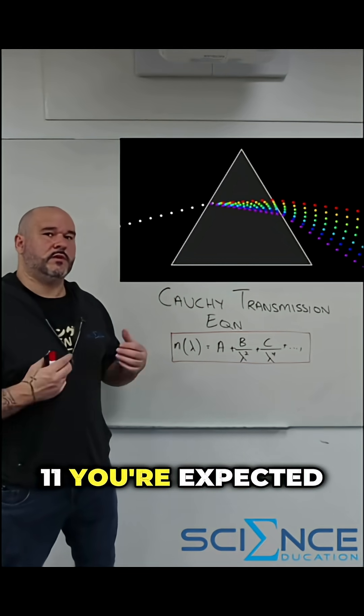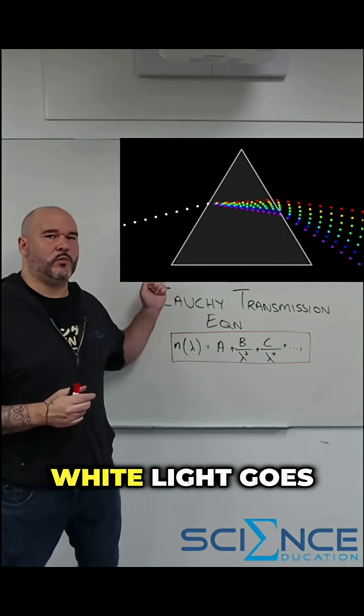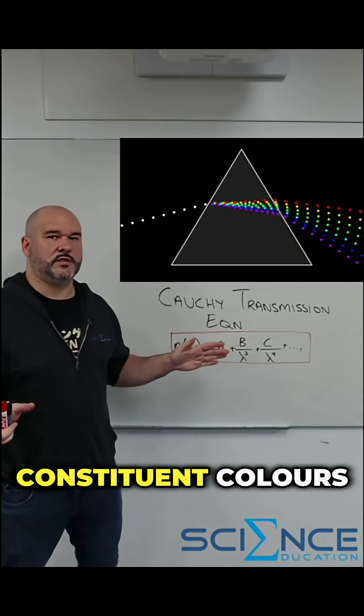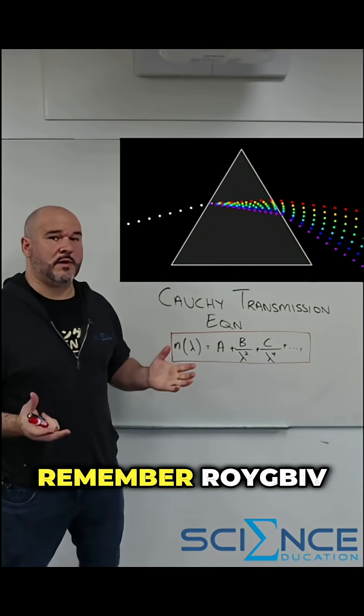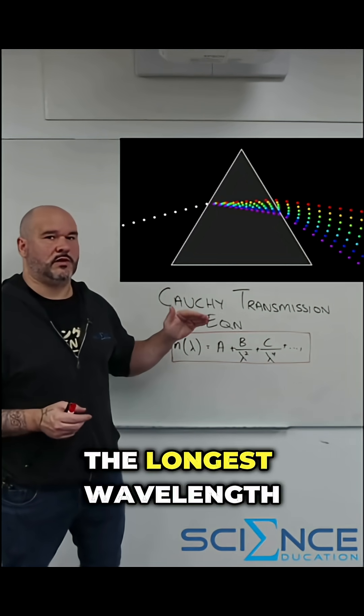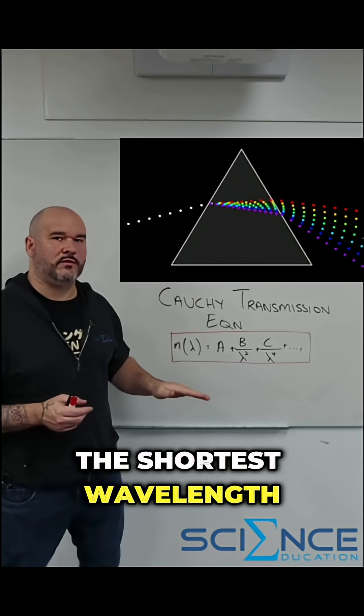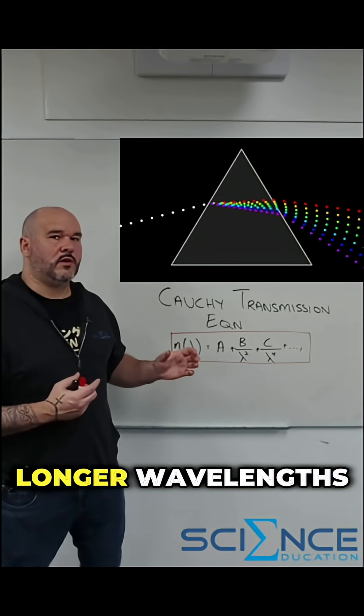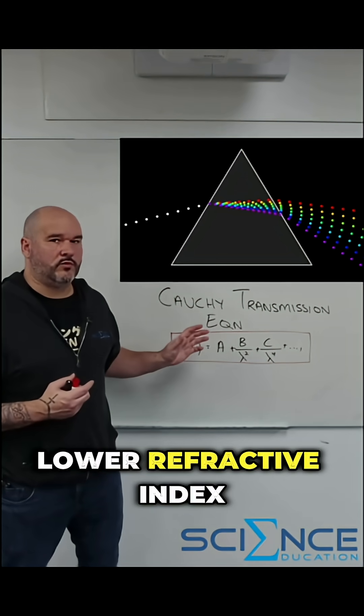So for year 11 you're expected to know dispersion is when white light goes into a prism and it breaks up into its constituent colors. It's useful to remember ROYGBIV where R is the longest wavelength and violet is the shortest wavelength. It's useful to remember that the longer wavelengths actually experience a lower refractive index.